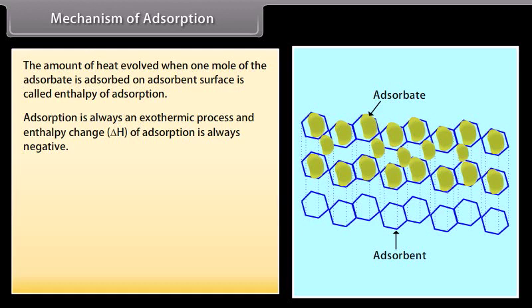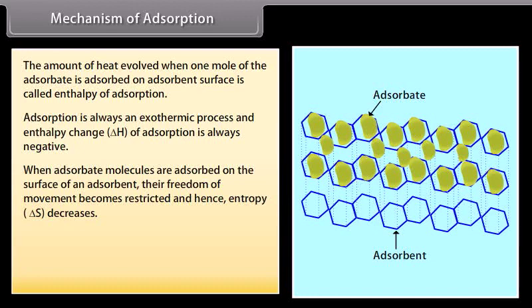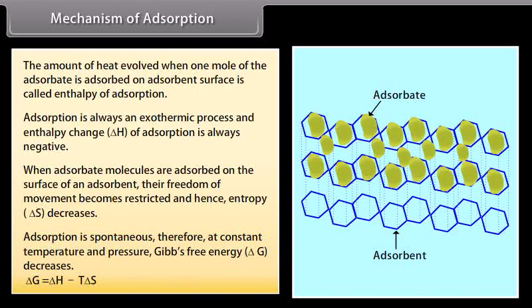Adsorption is always an exothermic process, and the enthalpy change of adsorption is always negative. When adsorbate molecules are adsorbed on the surface of an adsorbent, their freedom of movement becomes restricted and hence entropy decreases. Adsorption is spontaneous; therefore, at constant temperature and pressure, Gibbs free energy decreases. This is expressed as: ΔG = ΔH − TΔS.